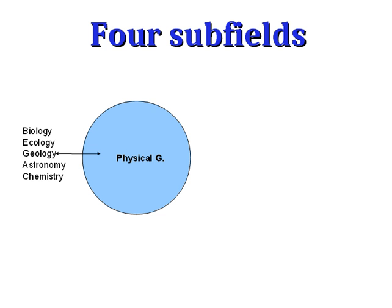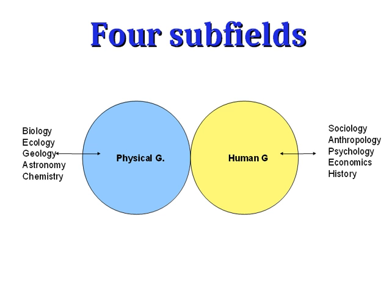If we can ask these questions about aspects of the non-human world, we can of course also ask them about aspects of the human world — and that subfield is called human geography. Just like physical geography has strong links to the natural sciences, human geography has strong links to the social sciences. We'll see ideas from sociology, anthropology, psychology, economics, and history coming into our explanations of what is where, why there, and why care when we're dealing with aspects of the human world.